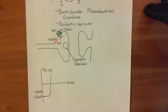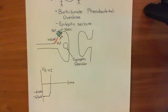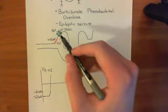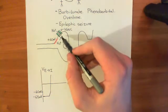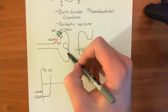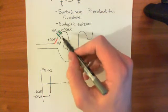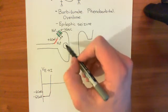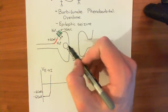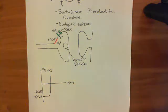Welcome to this second video on long-term potentiation. We're in the process of discussing the synaptic transmission process across a glutamatergic synapse — specifically the action potential in the axon terminal and how that is coupled to the release of glutamate, just as a bit of revision.